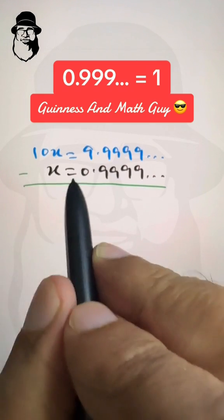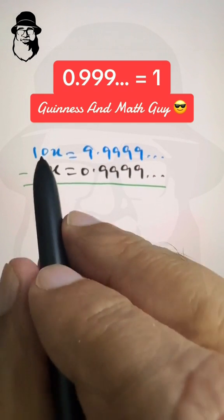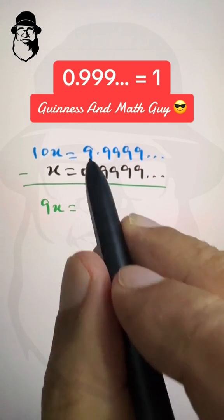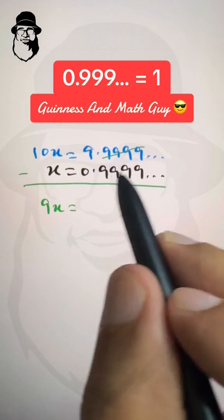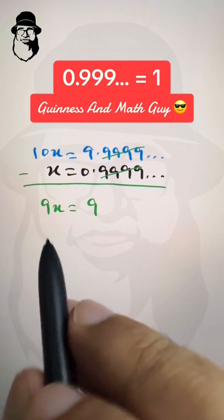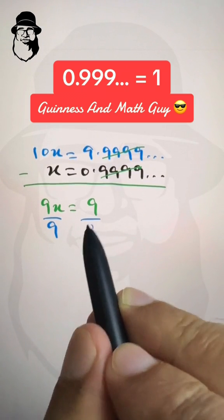We have 10x minus x, that is 9x, is equal to... this goes with this, right? And we are left with 9. Now divide both sides by 9...